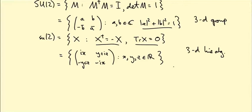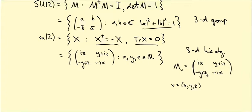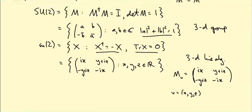One piece of notation we introduced is the matrix M_v in the Lie algebra. If v = (x, y, z), then M_v is the matrix (ix, y+iz; -y+iz, -ix). That's a piece of notation we're going to use in a moment.